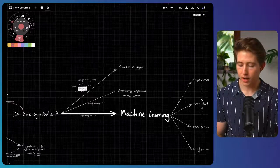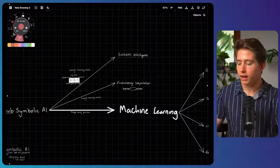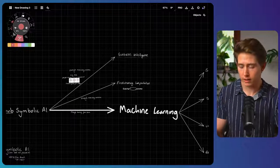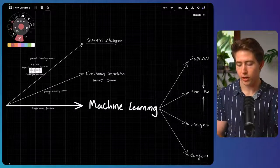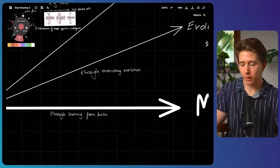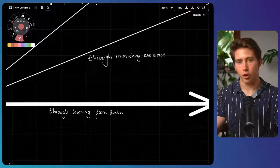And the final type of sub-symbolic AI, which is arguably the most important in the field of AI, and specifically these days, is machine learning.